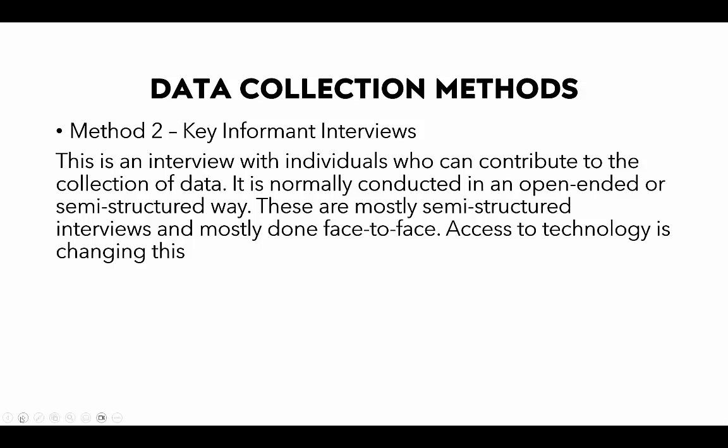Certain individuals have privileged information, which is why you target them in these interviews. For example, if you are implementing a project to give loans to women and you discover that women are not being receptive to these loans, you go to key informants — such as government officials — to get their view on why this is happening, because they may have privileged information about what's transpiring in the community.